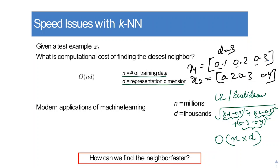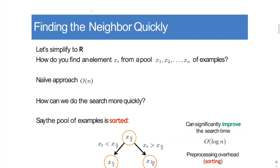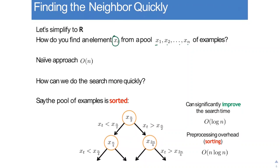But can we find the nearest neighbor faster? So before we answer the question, let us consider this simple case. Say you have a number Xt and some other numbers X1 to Xn. How do you check whether Xt lies in these pool of numbers or not? So the naive approach would be to check Xt with X1, check Xt with X2, and so on till Xn. So this will take order N time. So can we do it more quickly?